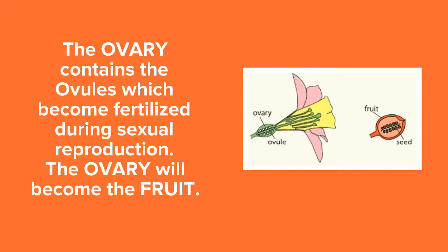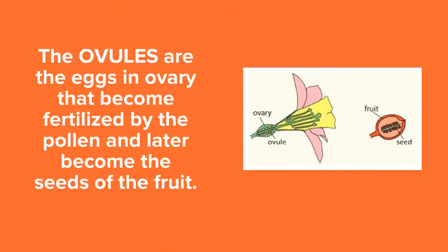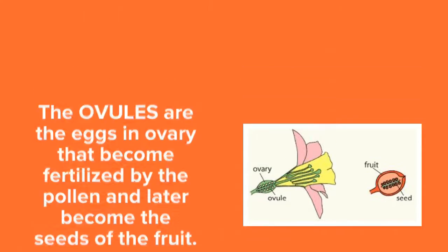The ovary contains the ovules, which become fertilized during sexual reproduction. The ovary will then become the fruit. The ovules are tiny little eggs in the ovary that become fertilized by the pollen and later become the seeds of the fruit.